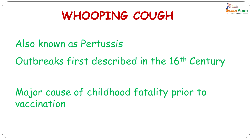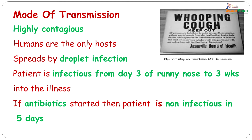So let us look at the disease. It is also called pertussis. Outbreaks were first described way back in the 16th century and this was a major cause of childhood deaths prior to vaccination. The mode of transmission is by droplet infection; it is highly contagious, humans are the only hosts, and the patient is infectious from day 3 of the runny nose to 3 weeks into the illness. If antibiotics are started then the patient becomes non-infectious within 5 days.